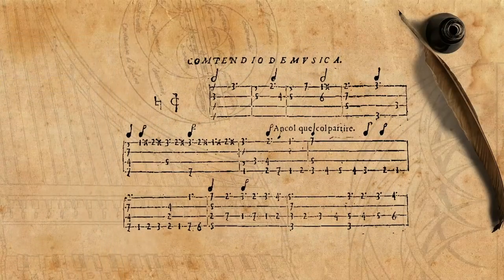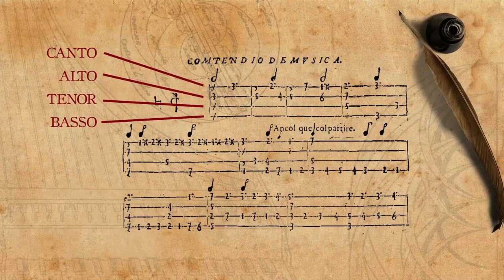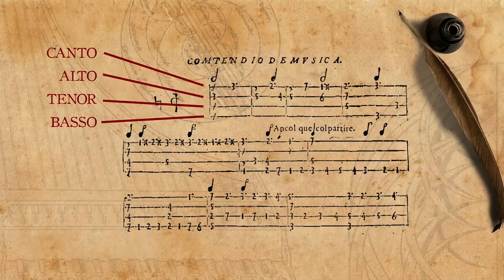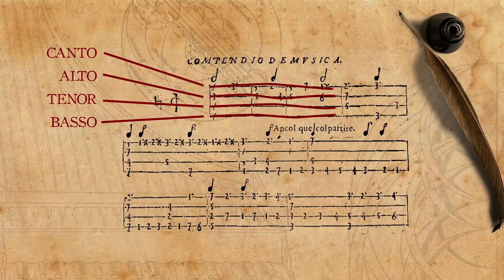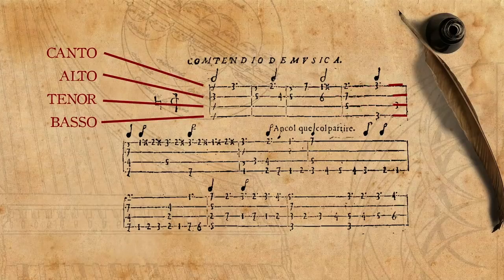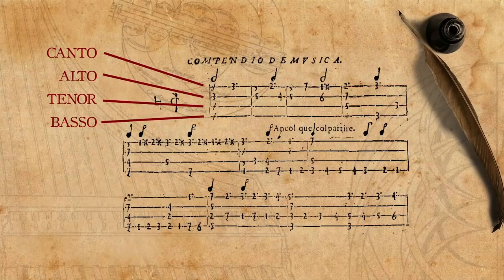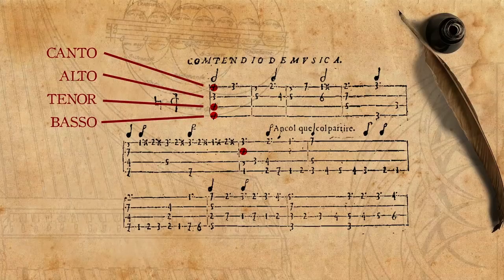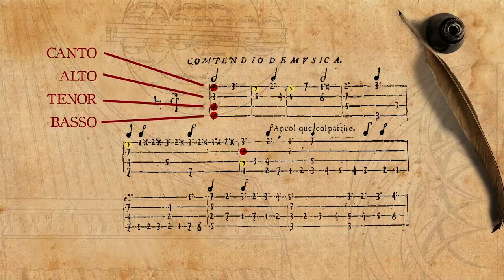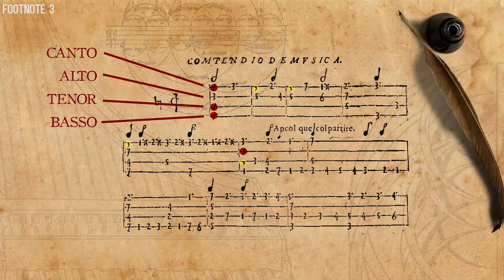Each line represents a part of the composition — in this case, four parts. Thus, it is possible to differentiate between the parts easily. In addition, there are signs for rests and a sign that allows you to prolong notes. Check the footnote for a more detailed explanation of this system.